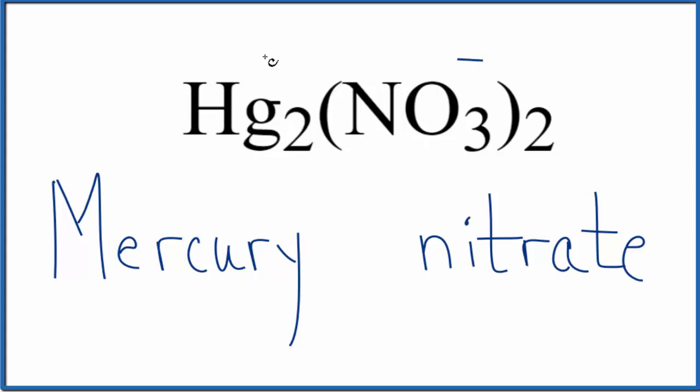Well, if we had a one plus here, two times one plus, that's two plus, that would balance out the charge, give us a net charge of zero. So we'd put a Roman numeral one between the names. And the name for Hg2(NO3)2 is mercury one nitrate.